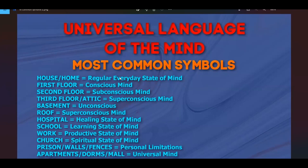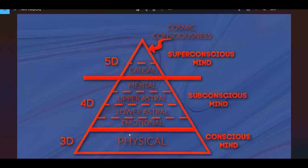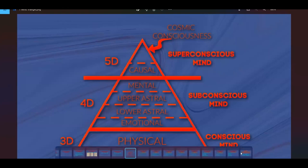The first floor represents the conscious mind, the second floor the subconscious mind, and the third floor the superconscious mind. So if you're having a dream on the first floor, it's about the physical conscious mind; second floor is subconscious; third floor or attic is superconscious.